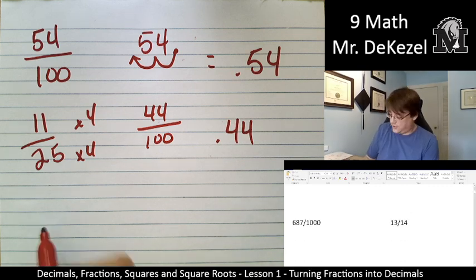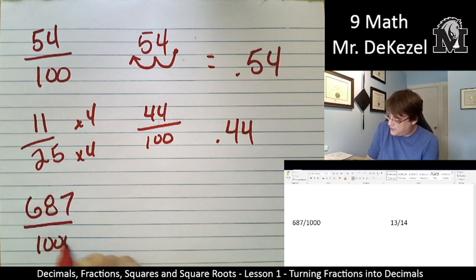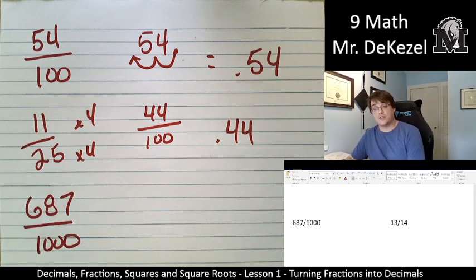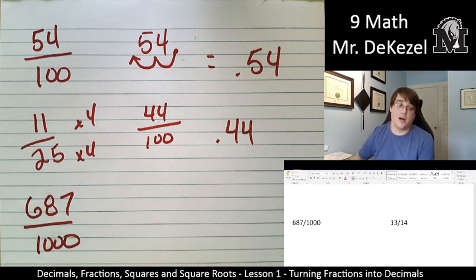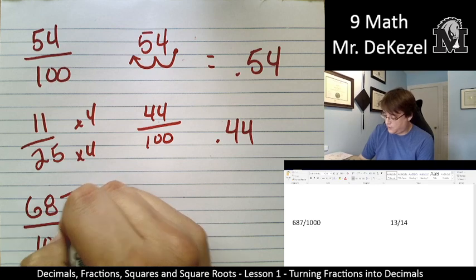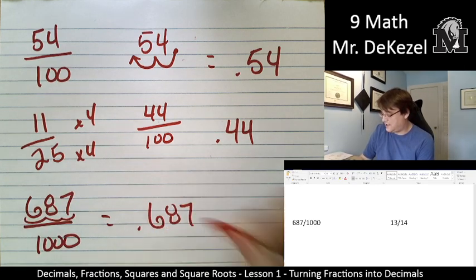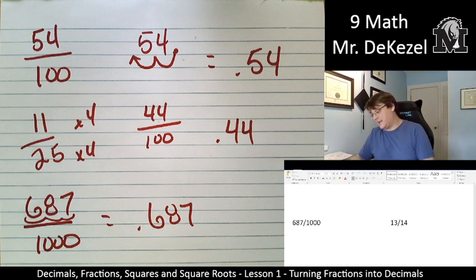Let's do 687 out of 1,000. 687 out of 1,000. It's a denominator that we like, so we're just going to move the decimal place over 3. 1, 2, 3. So that would be 0.687 for a decimal.